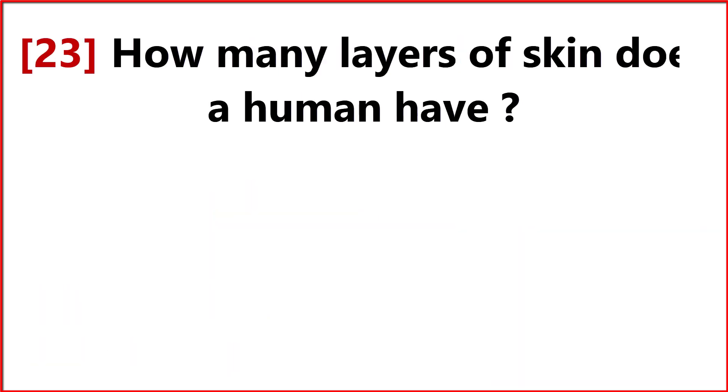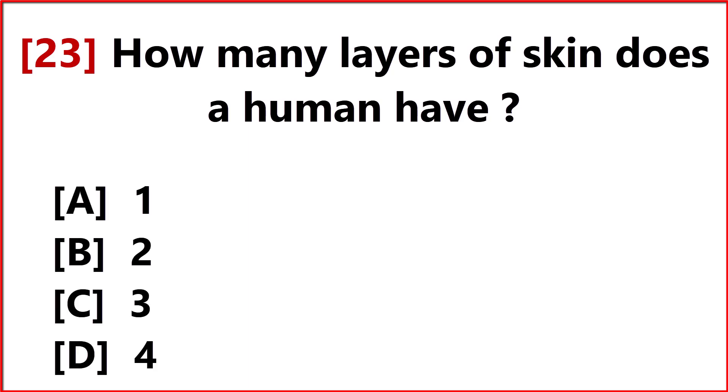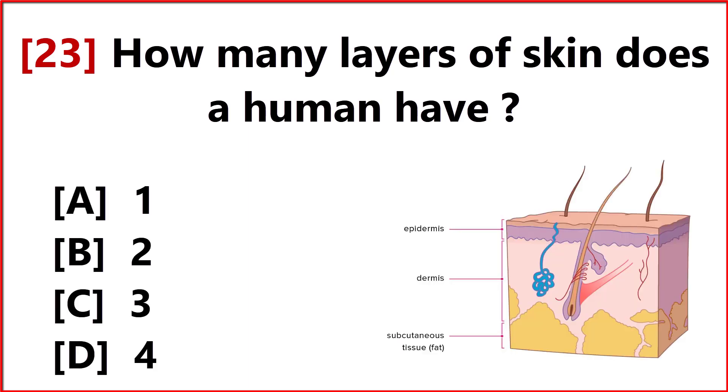How many layers of skin does a human have? Option C. Three.